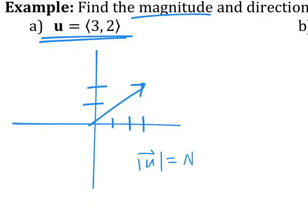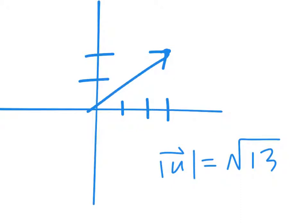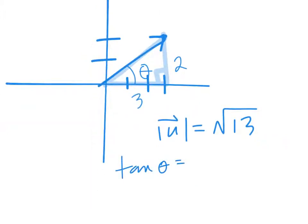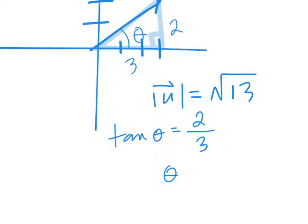The length of this vector is square root 13. Now, direction has to do with the angle, always measured from 0 degrees. What is that angle? You can use tangent — it's the fastest. This is a right triangle: this side is 3, this is 2. Tangent relates the adjacent and opposite, so tangent of theta equals opposite over adjacent. Go ahead and figure out what the angle is. Theta equals 33.7 degrees.